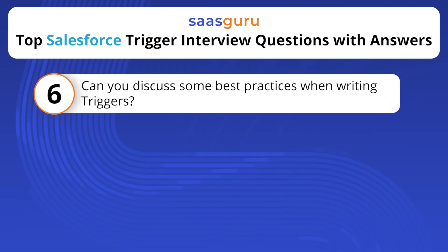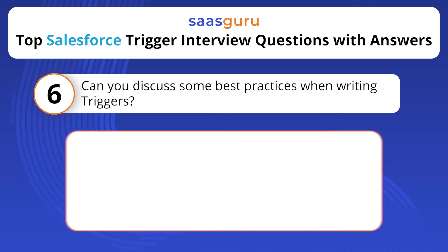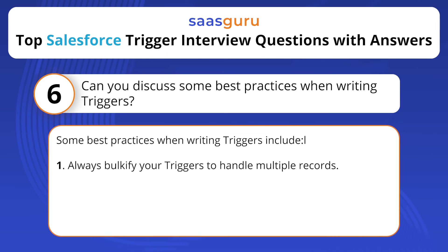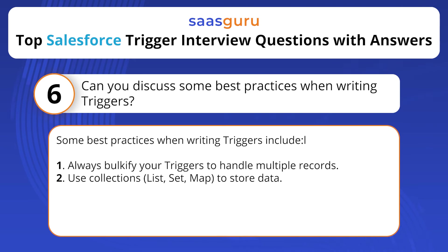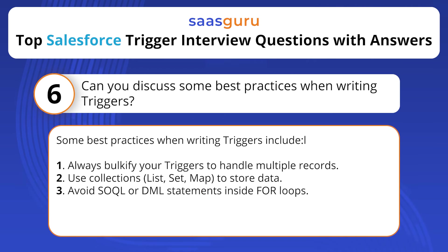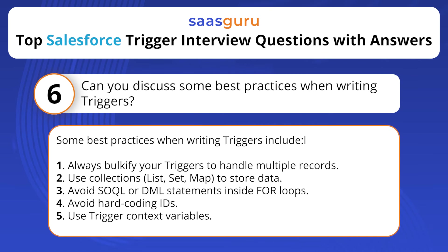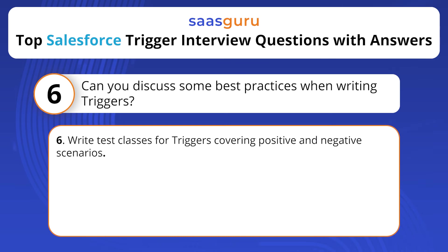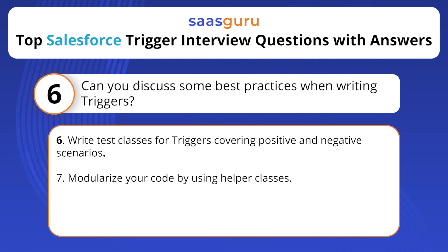Can you discuss some best practices when writing triggers? Some best practices include: always bulkify your triggers to handle multiple records; use collections — list, set, map — to store data; avoid SOQL or DML statements inside for loops; avoid hard-coding IDs; use trigger context variables; write test classes for triggers covering positive and negative scenarios; and modularize your code by using helper classes.